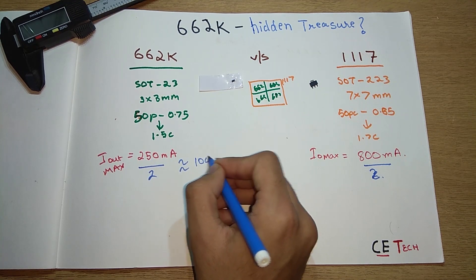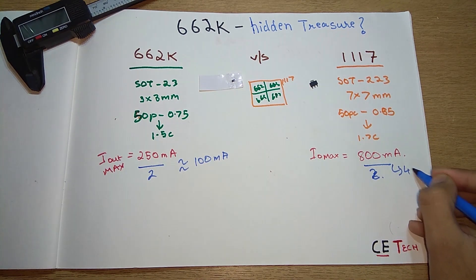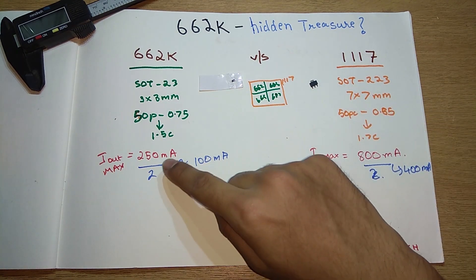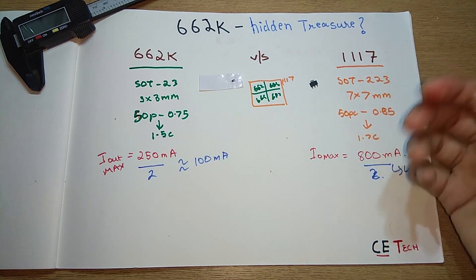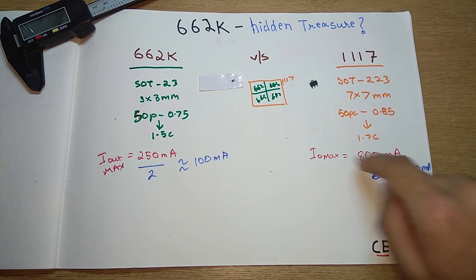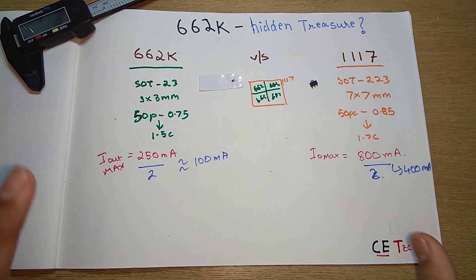For power dissipation reasons, I'd suggest you operate these chips at half the output current possible. So operate this at around 100 to 125 milliamps, whereas operate this at around 400 milliamps. This would be optimal for heat dissipation also, because if you use these chips at the highest current, they will heat up and may get damaged. That's the condition for I_out max.